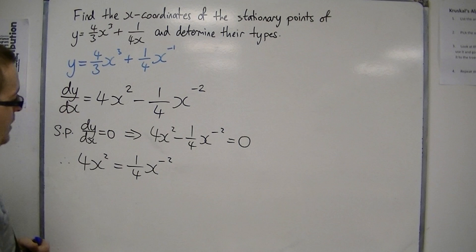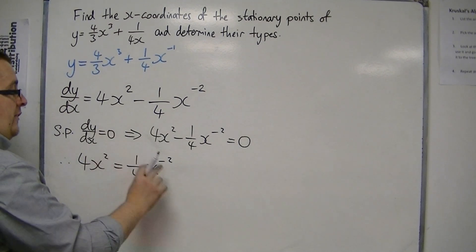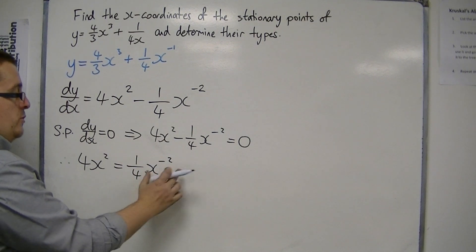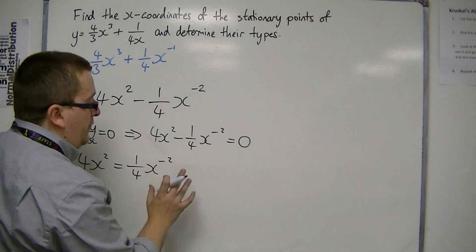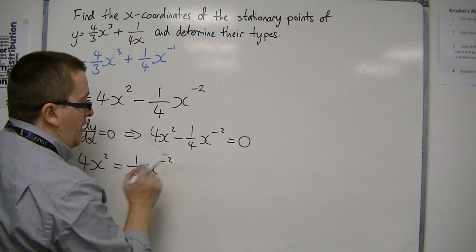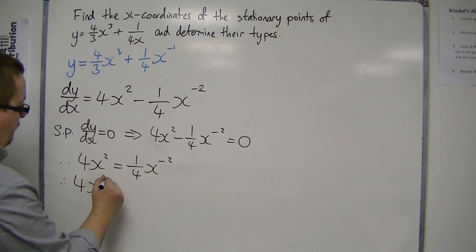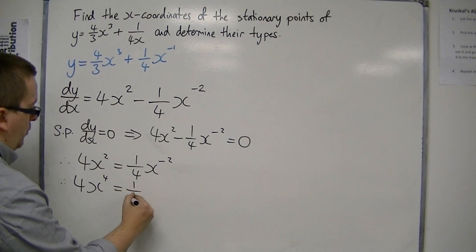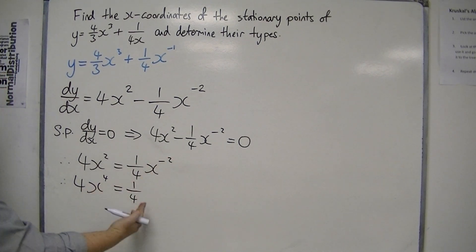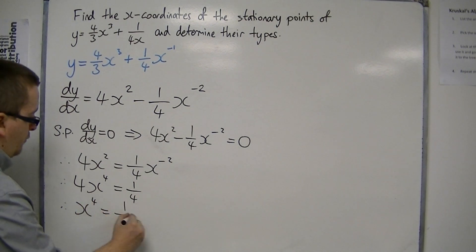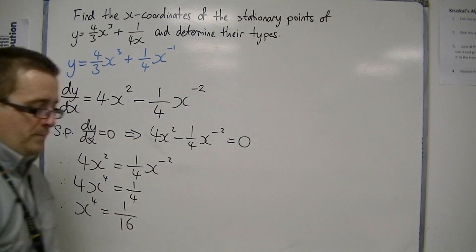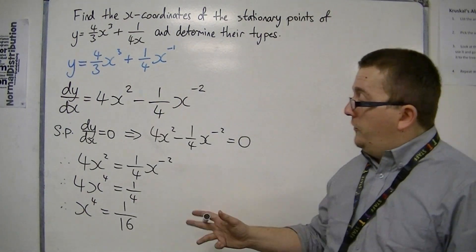Then I'm going to multiply both sides by x². What that's going to do is eliminate the x⁻², because I'm going to have x⁻² times x², the 2 and the -2 will cancel. And so I'll get 4x⁴ is equal to 1/4. And then I can divide through by 4, so that x⁴ is now 1/16. So x⁴ is 1/16.